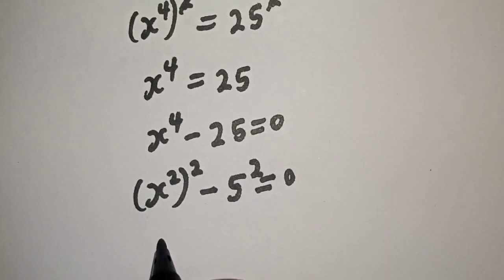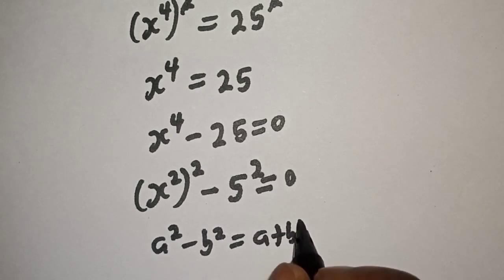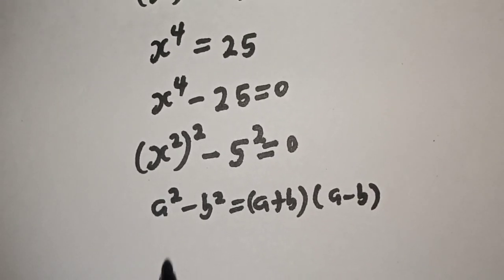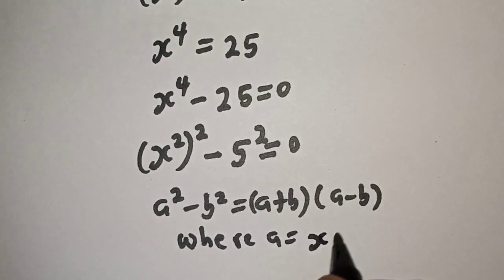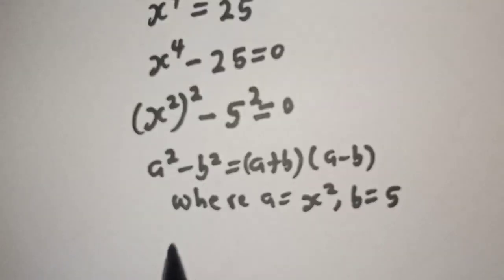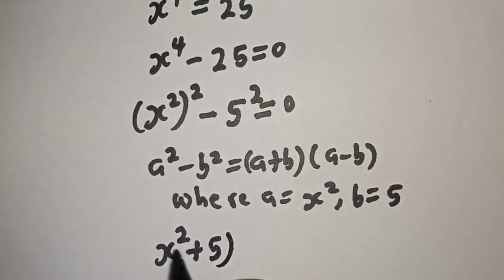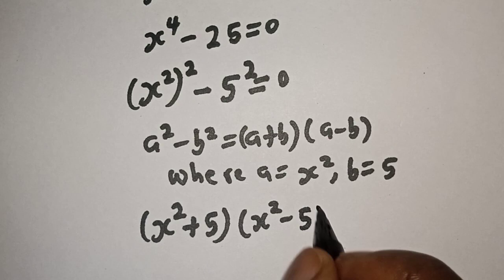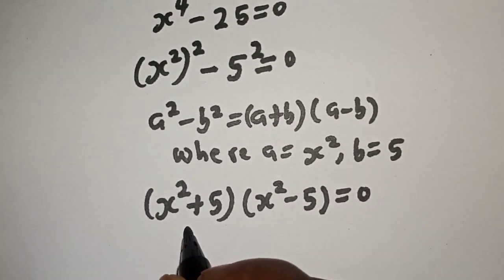This is a difference of two squares: a squared minus b squared is equal to a plus b multiplied by a minus b, where a is equal to s squared and b is equal to 5. So we have s squared plus 5, multiplied by s squared minus 5, is equal to 0. There are two cases here.